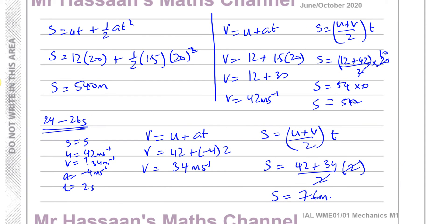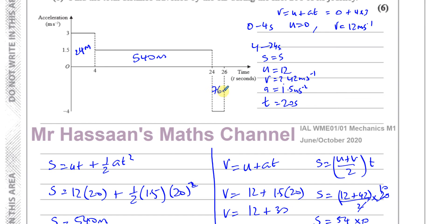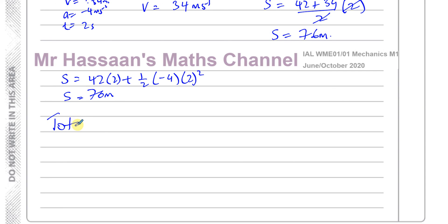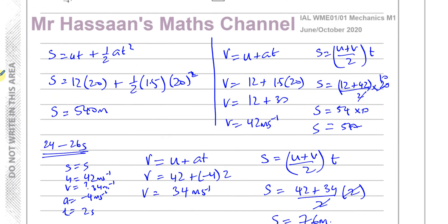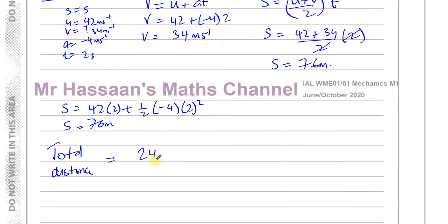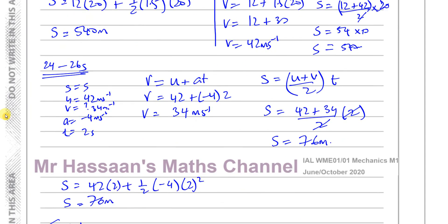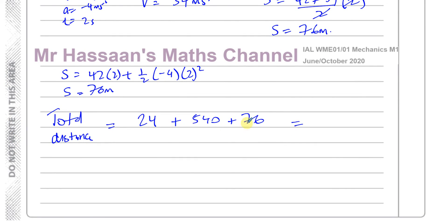The distance in the last section is 76 metres. Adding all three distances: 24 plus 540 plus 76. That's 76 plus 24 equals 100, plus 540 equals 640 metres. The total distance is 640 metres.